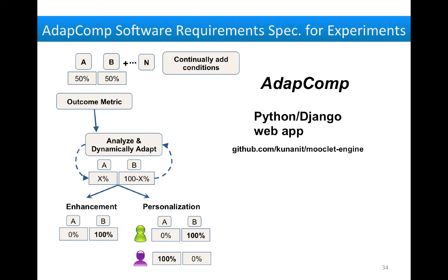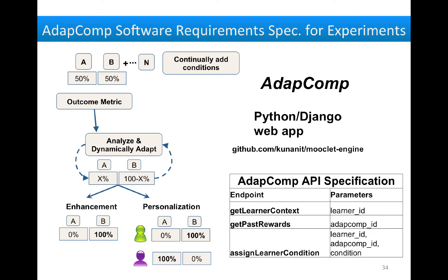We've implemented this as a Python Django web app, which anyone can use to declare simple A/B experiments, but also be able to plug in different algorithms to dynamically adapt, or have API calls that allow people to add conditions dynamically.